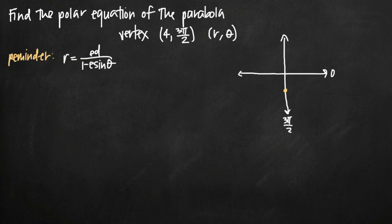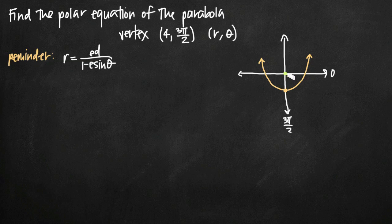Now in a problem like this, it's a given that the focus of the parabola is at the polar origin. So our parabola wraps up and around the focus. This is just a rough sketch. The focus is here, and what we need to do is find the directrix of this parabola.